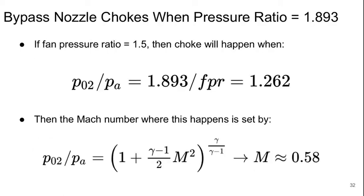Well we know that the bypass nozzle chokes when the pressure ratio is 1.893. So if the fan pressure ratio is 1.5, then by taking that ratio we can get the P0.2 over PA of 1.262 will just choke the nozzle. And we can determine the Mach number where that happens and it's going to be about 0.58.